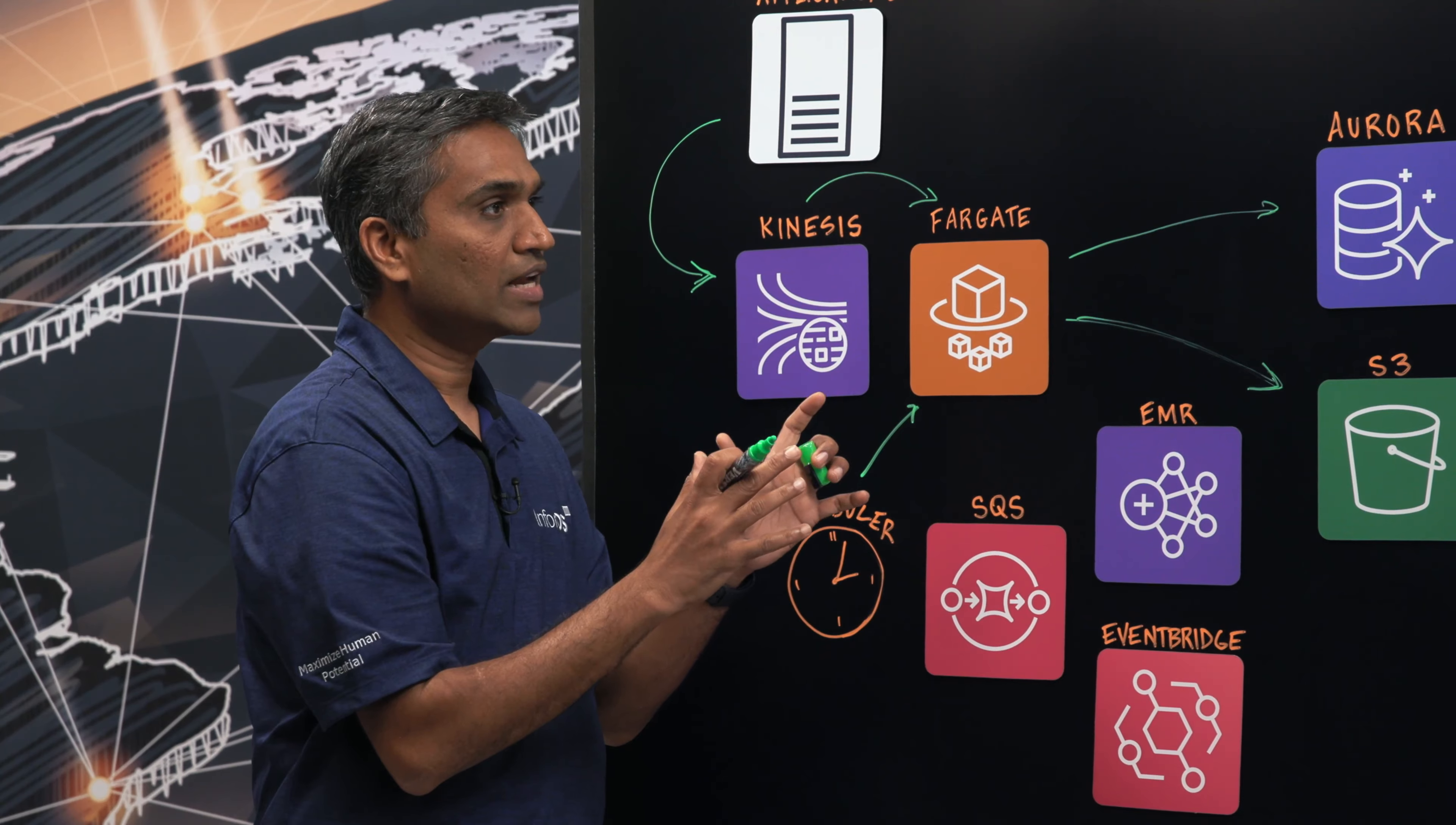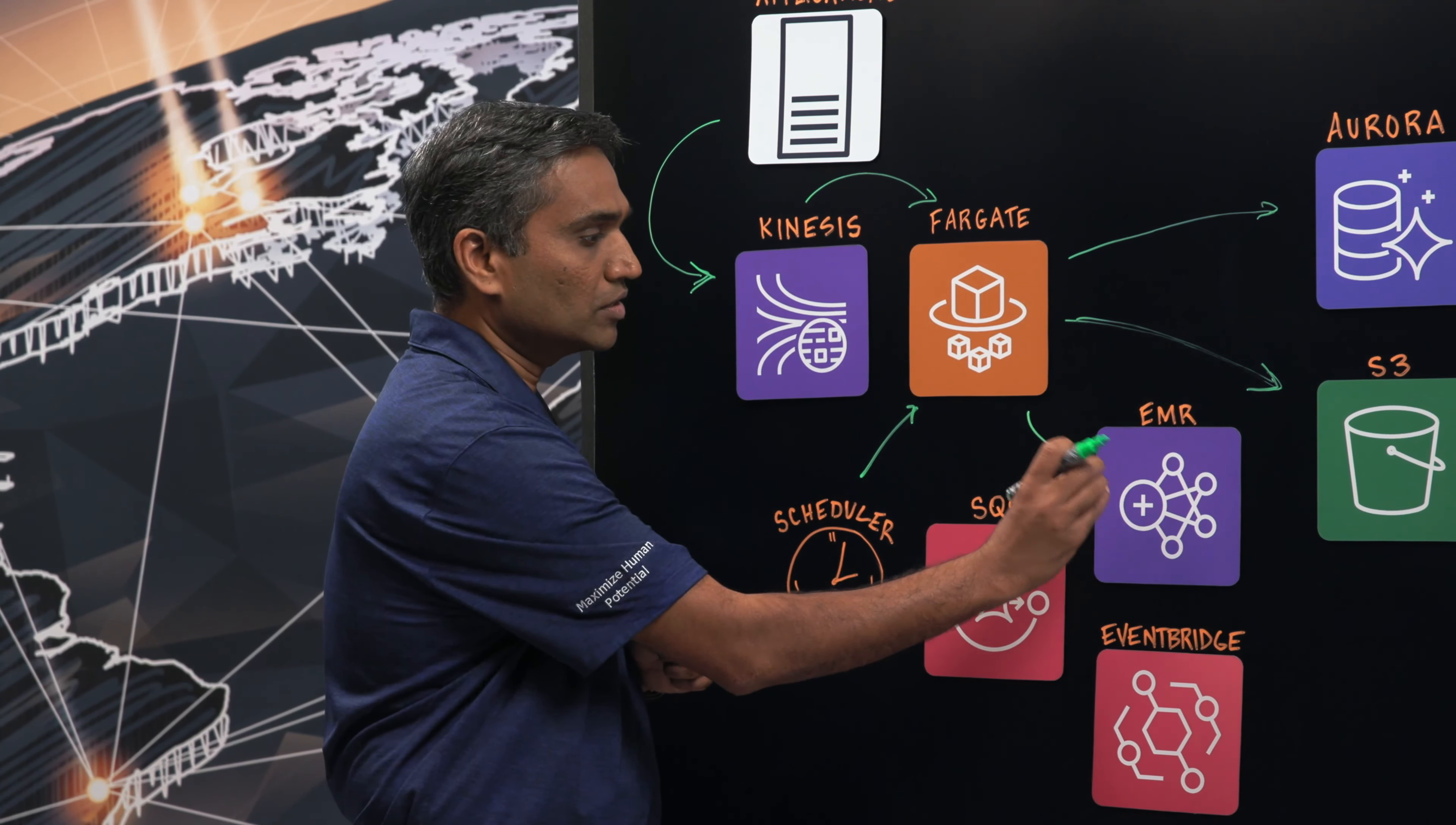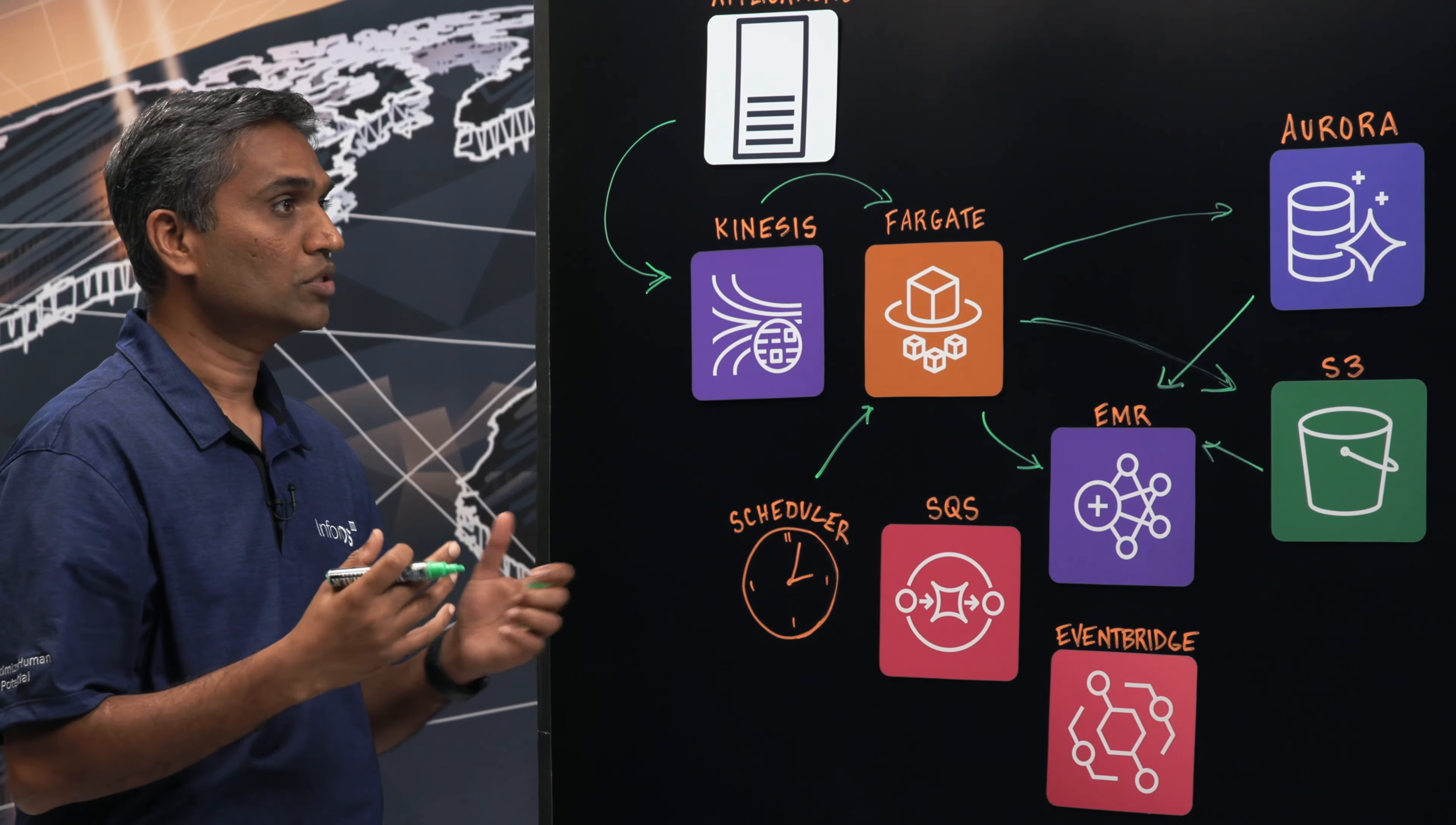And here we do the scoping of the analysis and once the scoping is done, we trigger an EMR job using the Spark engine. So the EMR job that runs on the Spark engine basically retrieves the data from Aurora as well as S3, does the analysis, and executes a lot of rules on the data.